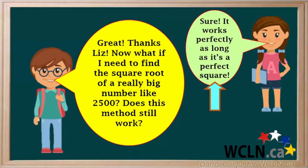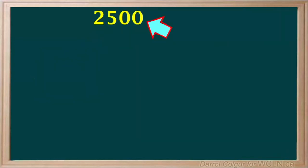Liz reminds them that it will work as long as the number we're taking the square root of is a perfect square. To find the square root of 2500,